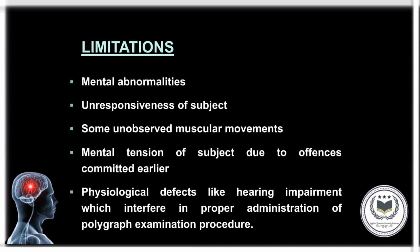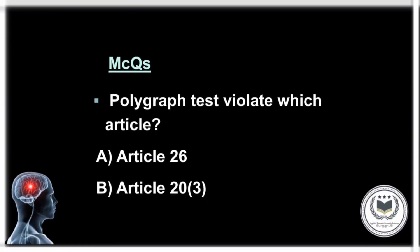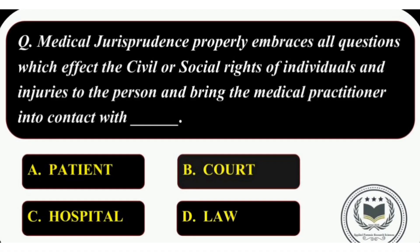That is the end of the video. To check what you have learned, here is a question: Polygraph test violates which article? Option A: Article 26, or Option B: Article 20 Clause 3. You can drop your answers in the comment box below. In our previous video on Introduction to Medical Jurisprudence, we asked: 'Medical jurisprudence properly embraces all questions which affect the civil and social rights of individuals and injuries to the person, bringing the medical practitioner into contact with — Option A: Patient, Option B: Court, Option C: Hospital, or Option D: Law.' The correct answer is Option D: Law.